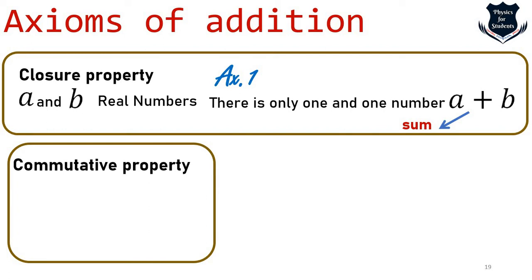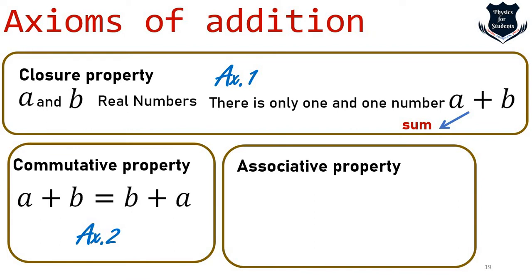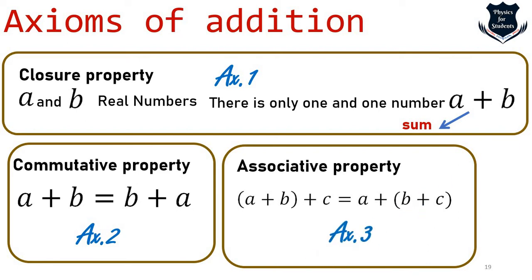Next is the commutative property. In general, 'commute' means to change or exchange — so commutative property is all about that: a plus b in exchange gives b plus a. We call this Axiom 2. The third is the associative property — 'association' means to connect or join with something. So a plus b plus c connects and we call this Axiom 3. We are done with the closure, commutative, and associative property — we know the real literary meaning and the mathematical meaning.